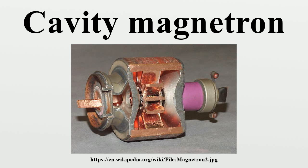Magnetrons saw limited use in conventional electronic designs. It was noticed that when the magnetron was operating at the critical value, it would emit energy in the radio frequency spectrum. This occurs because a few electrons, instead of reaching the anode, continue to circle in the space between the cathode and the anode. Due to an effect now known as cyclotron radiation, these electrons radiate radio frequency energy. The frequency of the radiation depends on the size of the tube, and even early examples produced signals in the microwave region.